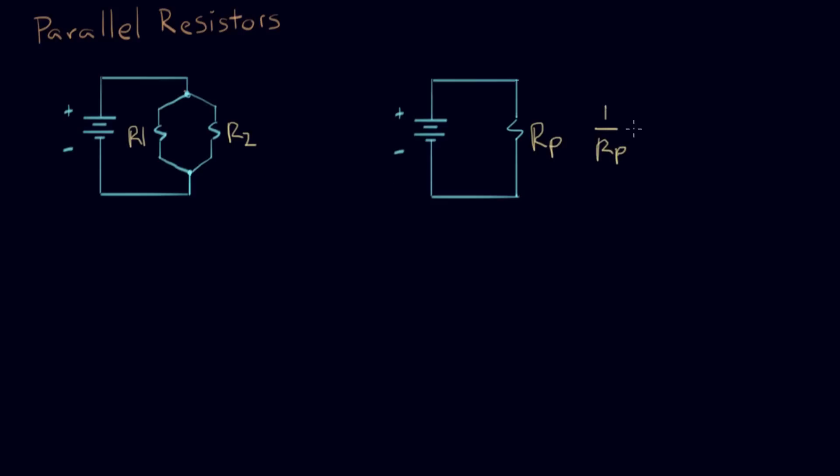1 over Rp equals 1 over R1 plus 1 over R2. So that's how you calculate the equivalent resistance for two parallel resistors.